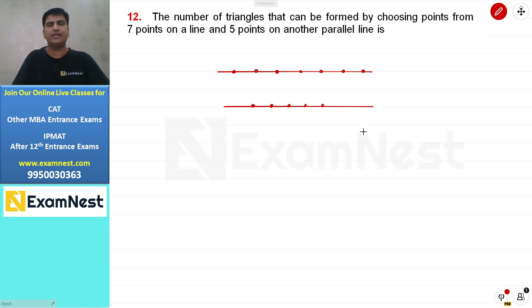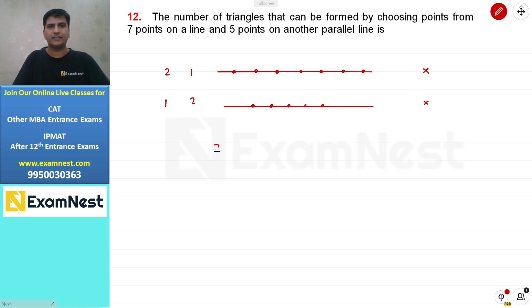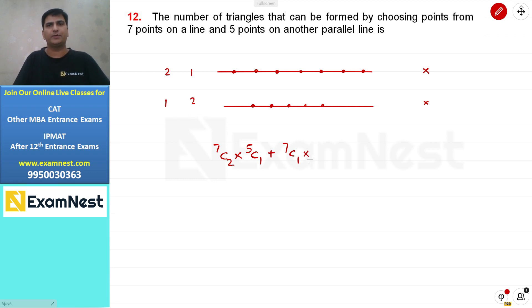The condition to form a triangle is that we need 3 non-collinear points. So we cannot take all 3 points from the same line. We can take 2 points from one line and 1 from the other, or 1 from one line and 2 from the other. First case: 2 points from the 7-point line, selectable in 7C2 ways, and 1 point from the other in 5C1 ways.